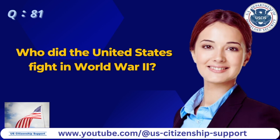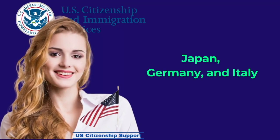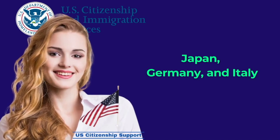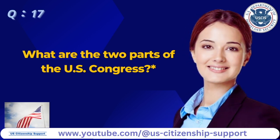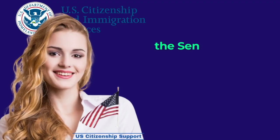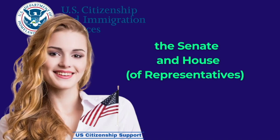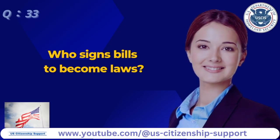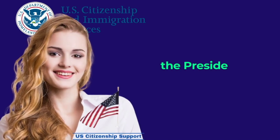Who did the United States fight in World War II? Japan, Germany, and Italy. What are the two parts of the U.S. Congress? The Senate and House of Representatives. Who signs bills to become laws? The President.